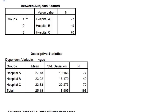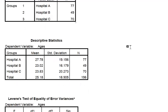Okay, this box is good. It tells us how many are in each of the groups — at each of the hospitals. And this box is important. It has all the means and the standard deviations of the groups. You're going to need that for your APA formatting.